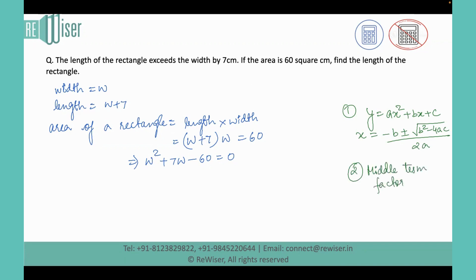In this particular question, we are going to apply middle term factorization. To do this, we need to check that the coefficient of W is 7 and the constant term is negative 60. We need to break negative 60 in a way that the product of two numbers is negative 60, which we can write as 12 times 5. To make it negative, we take one of the numbers as negative. Since the coefficient is positive, we'll keep the larger number in front and subtract 5 from 12 to get positive 7.